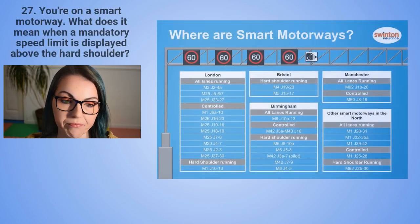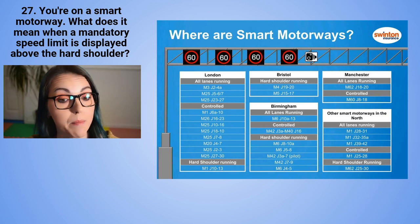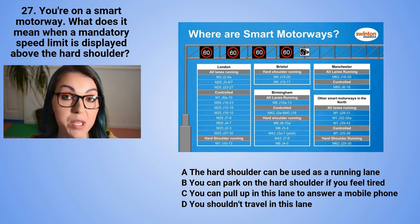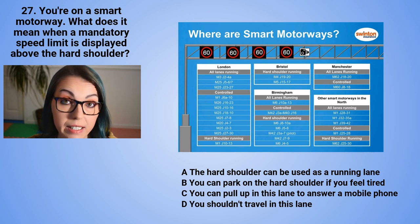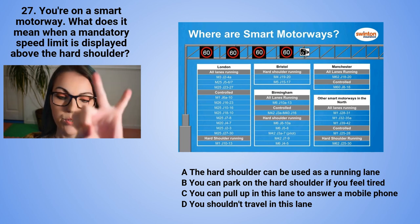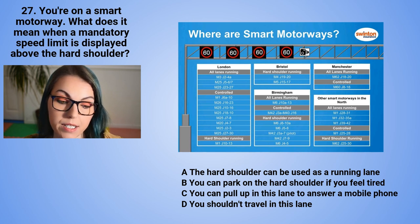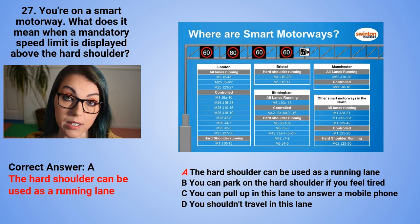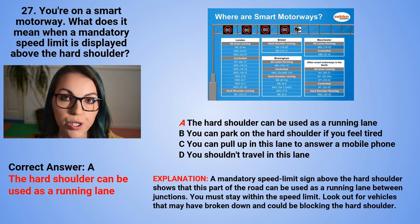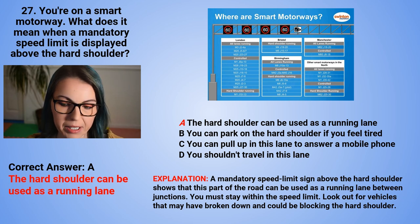Question 27: You are on a smart motorway. What does it mean when a mandatory speed limit is displayed above the hard shoulder? A. The hard shoulder can be used as a running lane. B. You can park on the hard shoulder if you feel tired. C. You can pull up in this lane to answer a mobile phone. Or D. You shouldn't travel in this lane. The correct answer is A — the hard shoulder can be used as a running lane. A mandatory speed limit sign above the hard shoulder shows this part of the road can be used as a running lane between junctions. Stay within the speed limit and look out for vehicles that may have broken down.